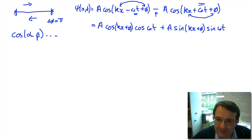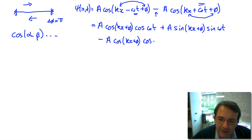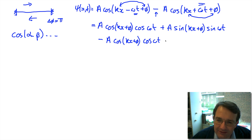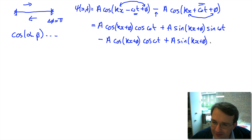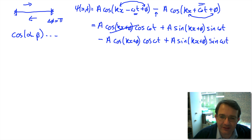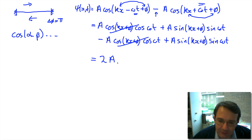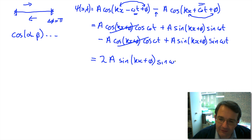Expanding out the second term — remembering it has a minus sign in front — gives: minus a times cosine(kx + φ) times cosine(ωt), and then because of the double minus, plus a times sine(kx + φ) times sine(ωt). The cosine terms cancel out, and the net displacement is just 2a times sine(kx + φ) times sine(ωt).